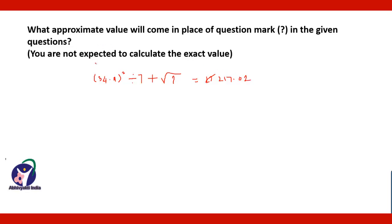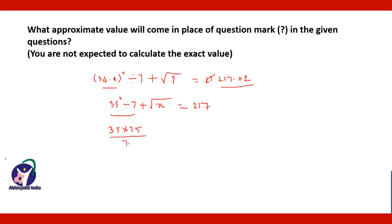Since we have to calculate the answer approximately, we can round off these numbers. So 34.9 will be 35 — 35 squared divided by 7, plus the square root of x (replacing question mark by x), which is equal to 217. Now, 35 squared means 35 multiplied by 35, divided by 7, plus the square root of x, that is equal to 217.02.